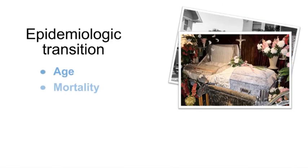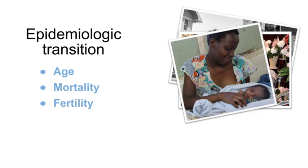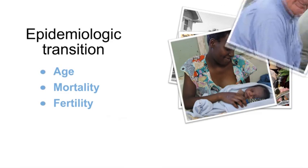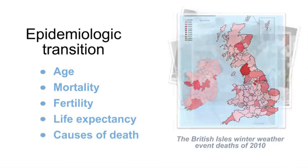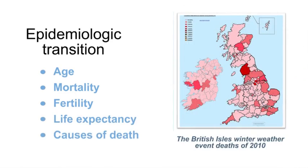Next, we will talk about epidemiologic transitions. An epidemiologic transition describes changing patterns of population age distributions, mortality, fertility, life expectancy, and causes of death.